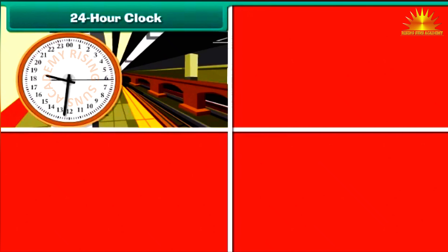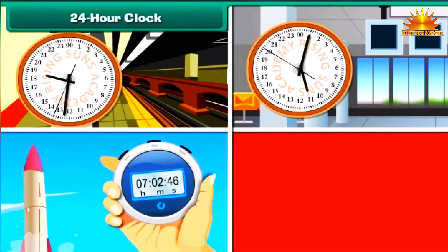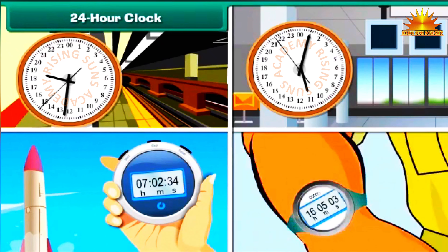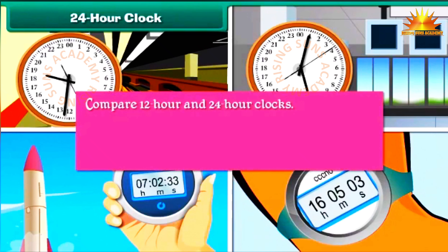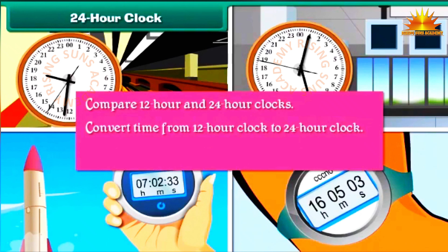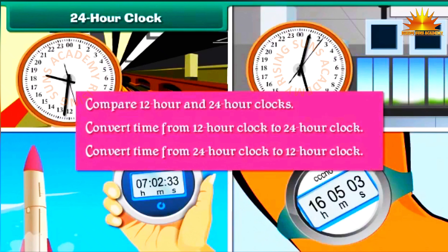The 24-hour clock is commonly used to specify the time of train and plane departures, take-off time of space shuttles, time of attack by the armed forces, etc. In order to understand it better, let us compare 12-hour and 24-hour clocks. Let us learn in detail.